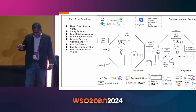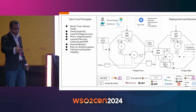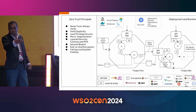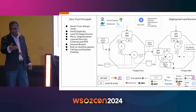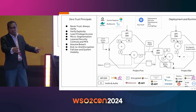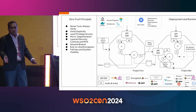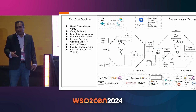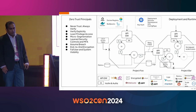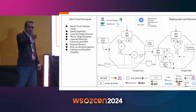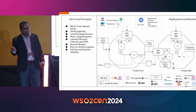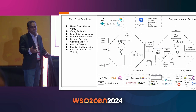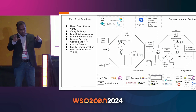Let's briefly look at the zero trust principles. Never trust, always verify — all traffic coming to a cell goes via a gateway where it is authenticated and authorized. Verify explicitly via the gateway. Least privilege access — the cell is network-bounded, so services can't communicate randomly. MFA and different authentication policies are available in the API layer. Assume breach — if someone exploits a service within a cell, they still can't talk to other cells, so the blast radius is controlled. All traffic is encrypted, and full user and system visibility is maintained through metrics and logs. This is how we implemented zero trust in Choreo.